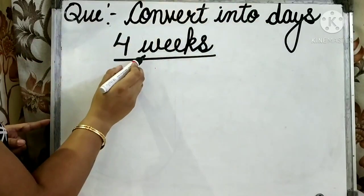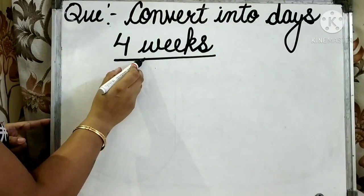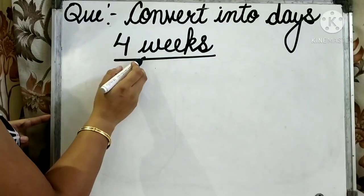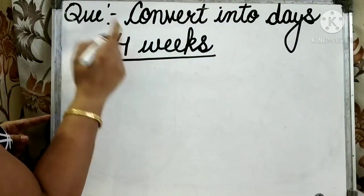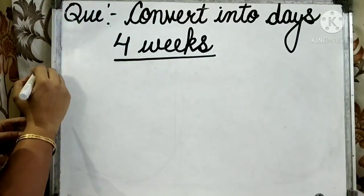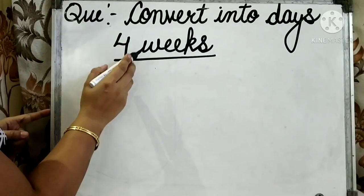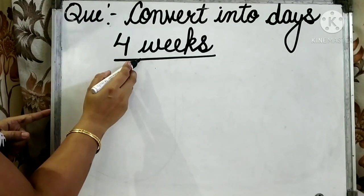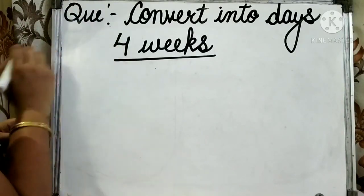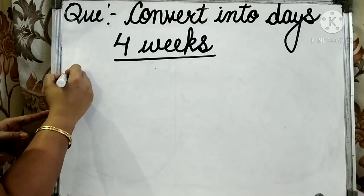So, first of all, we should know how many days are there in 1 week. And we know that in 1 week there are 7 days.